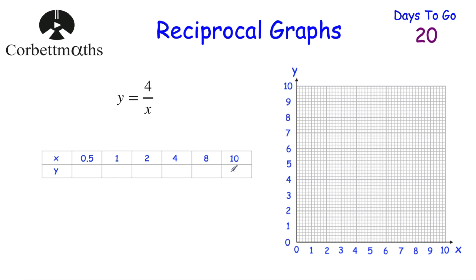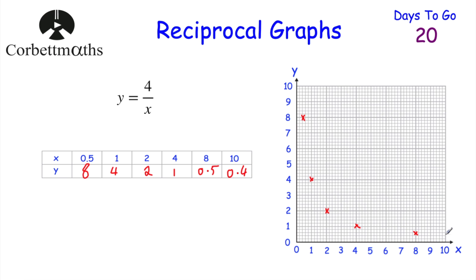So if x is equal to 10, 4 divided by 10 is 0.4. 4 divided by 8 is 0.5. 4 divided by 4 is 1. 4 divided by 2 is 2. 4 divided by 1 is 4. And 4 divided by a half is 8. So plotting those points: half across 8 up, 1 across 4 up, 2 across 2 up, 4 across 1 up, 8 across half up, 10 across 0.4 up - then draw a nice curve through them.